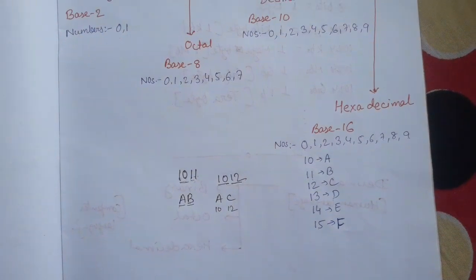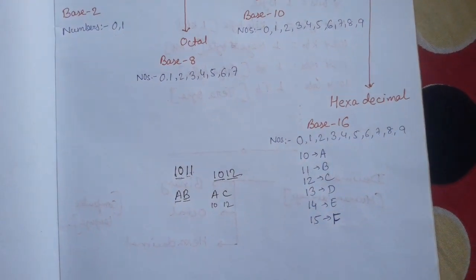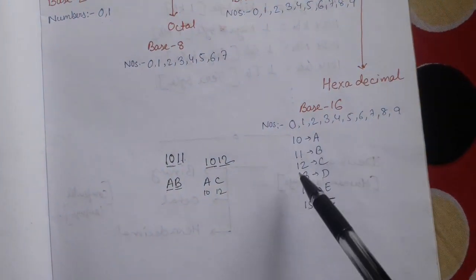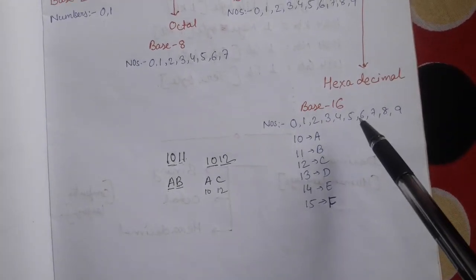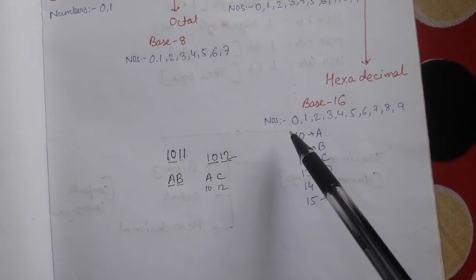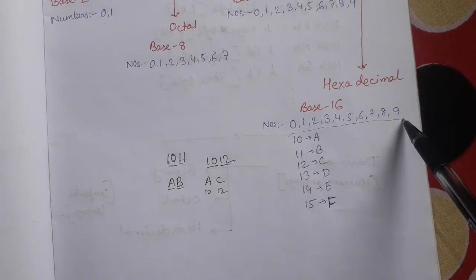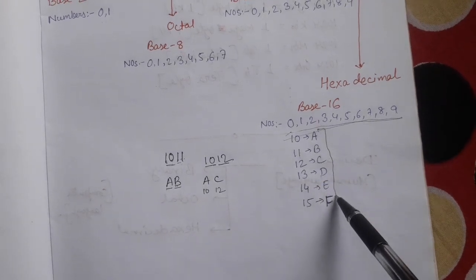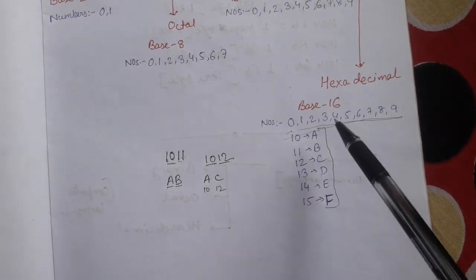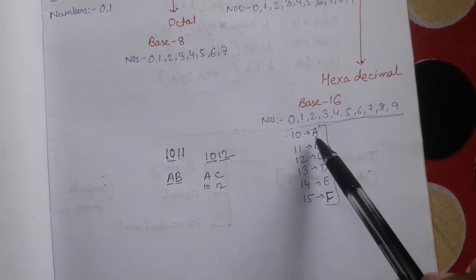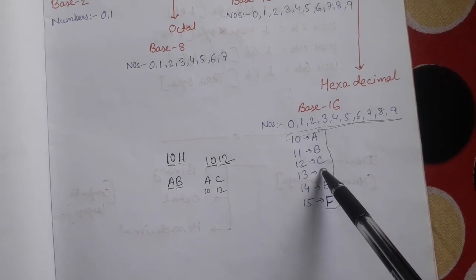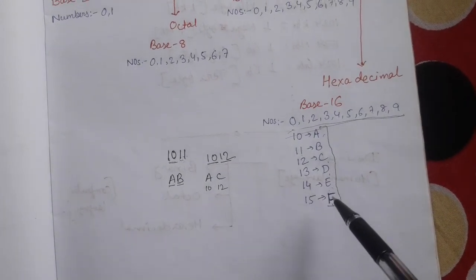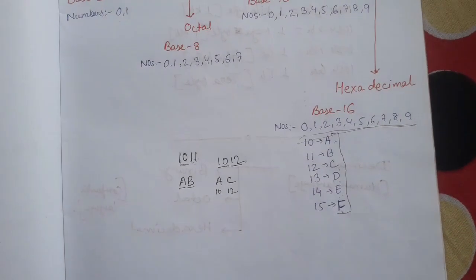That is why it is called the hexadecimal number system. We are having a total of 16 digits. Out of those, 10 are digits (0–9) and 6 are alphabets: a to f, representing 10, 11, 12, 13, 14, 15.